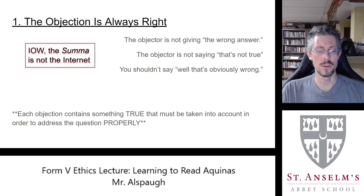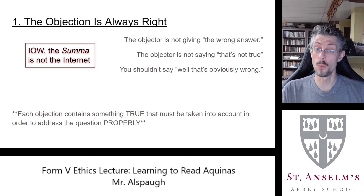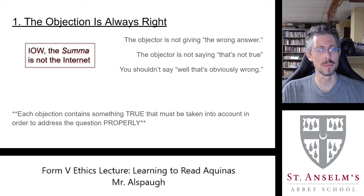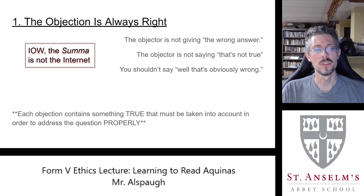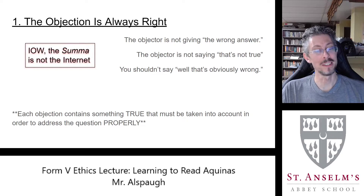So what are the objections doing? Every objection contains something true that must be taken into account in order to address the question properly. One way to see them is as putting obstacles in the way — maybe we want to answer in a particular way, but here are things we should keep in mind. Often, not always but often enough, the first objection in an article is Aquinas himself and the conclusion he just gave in the previous article. So the objection can't always be wrong.